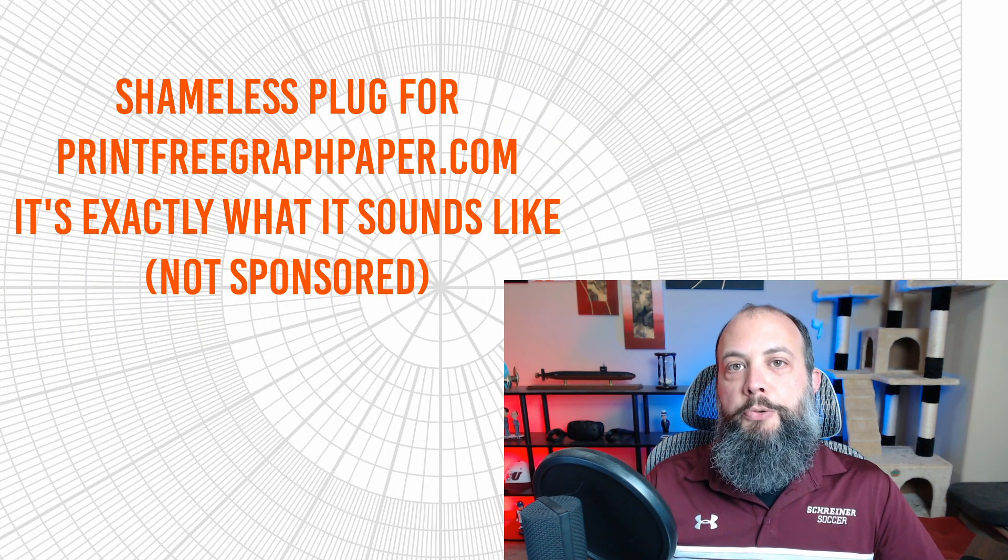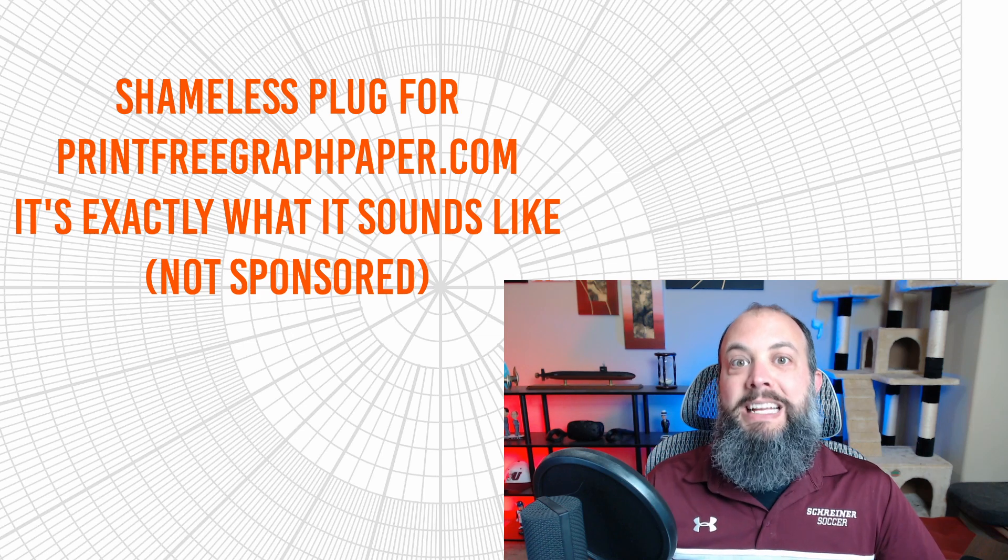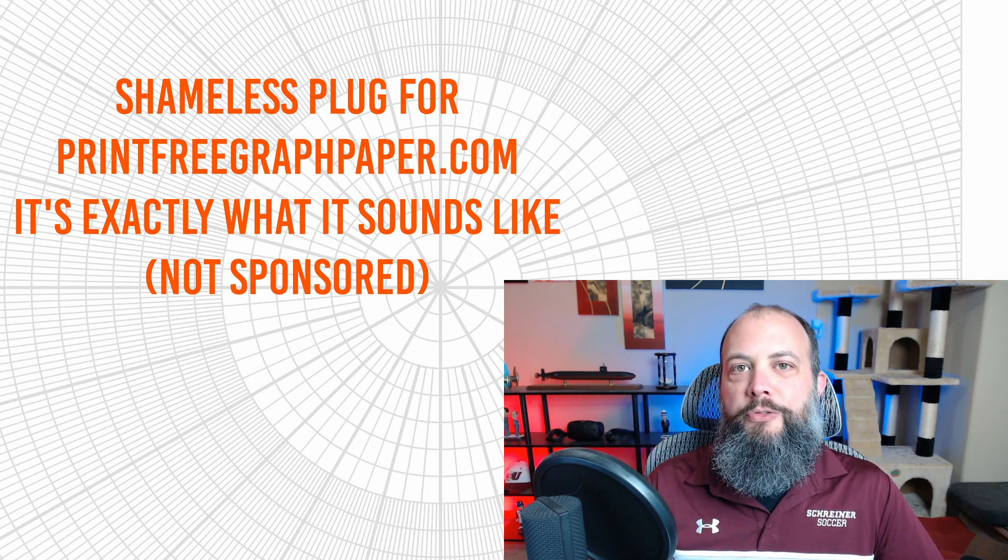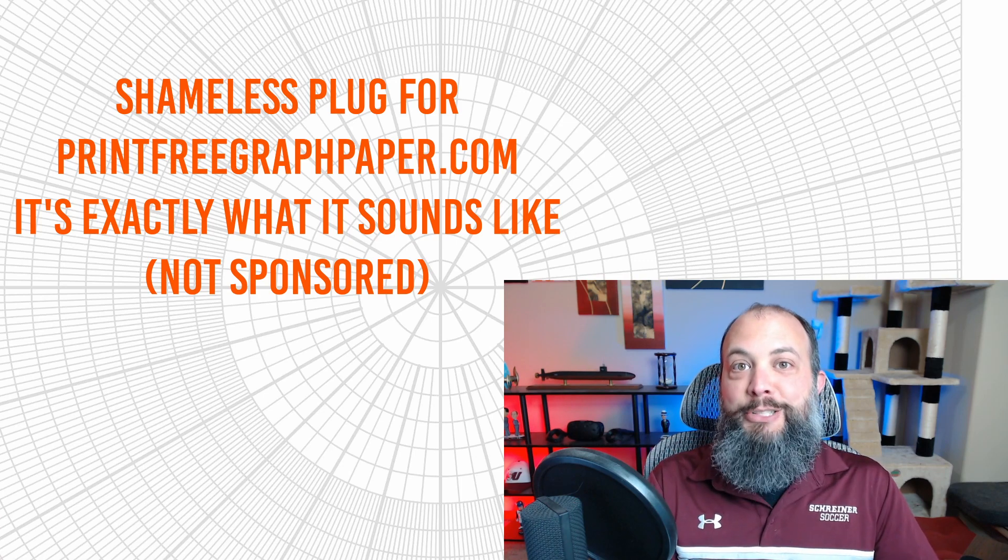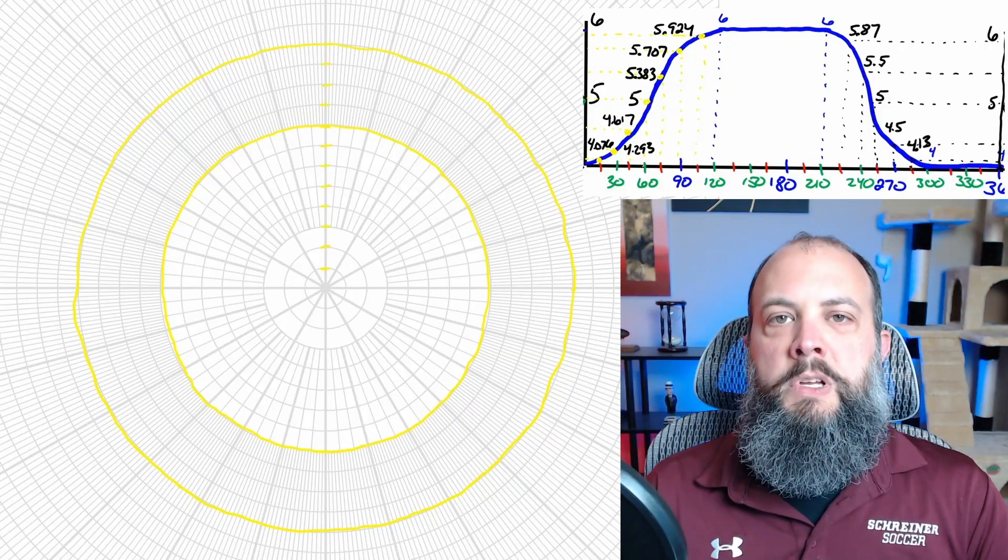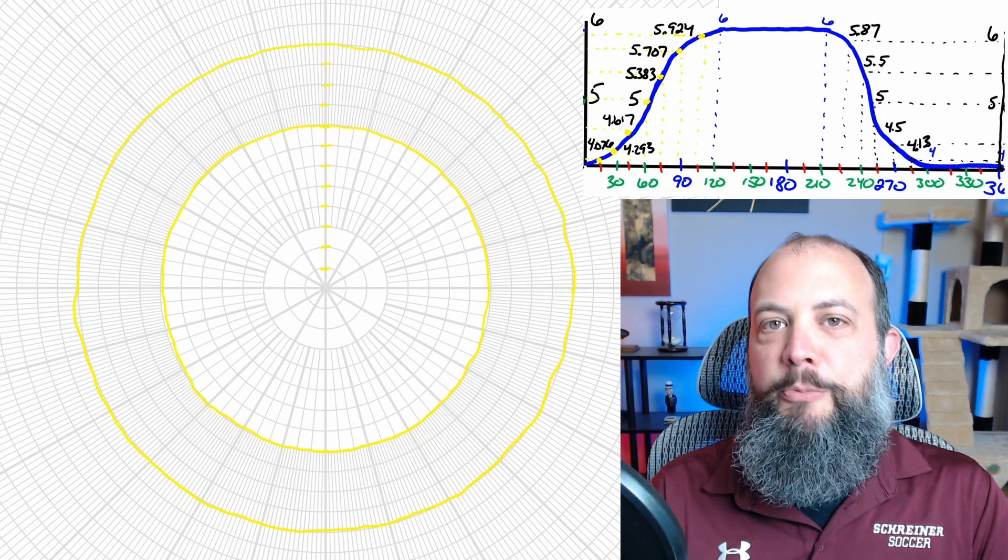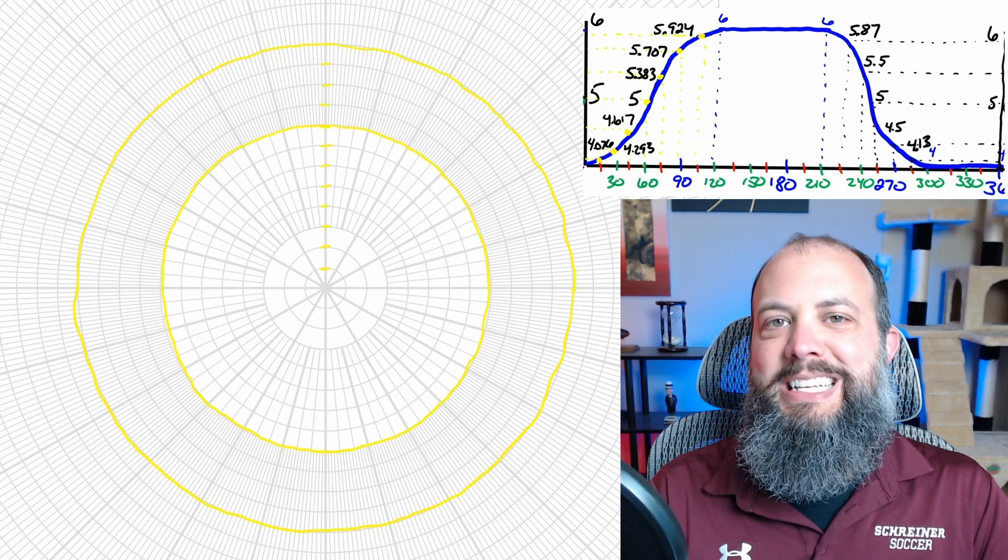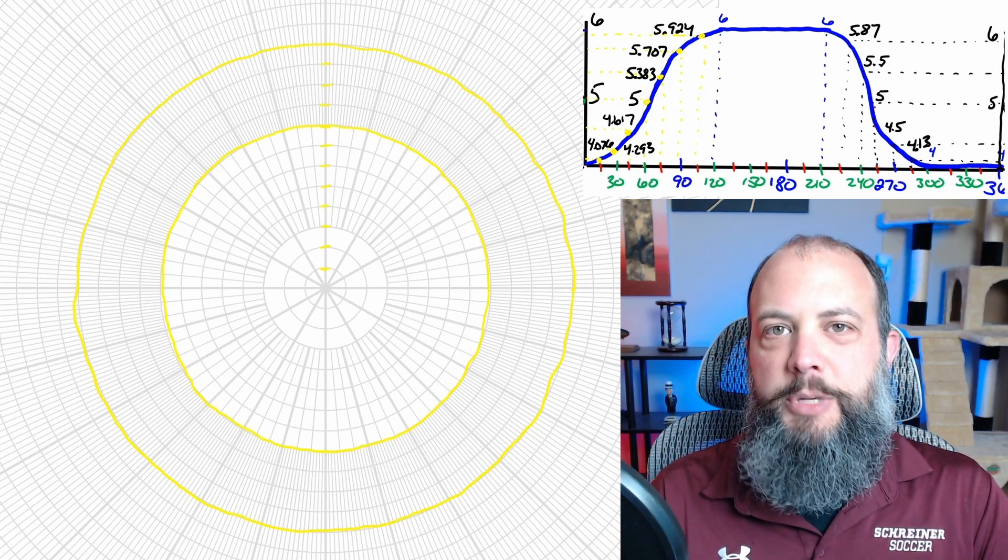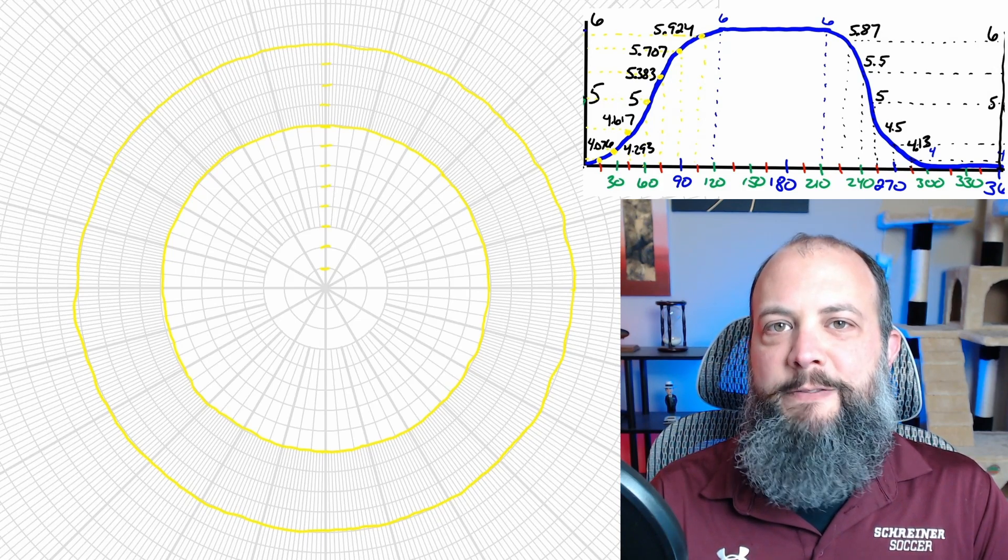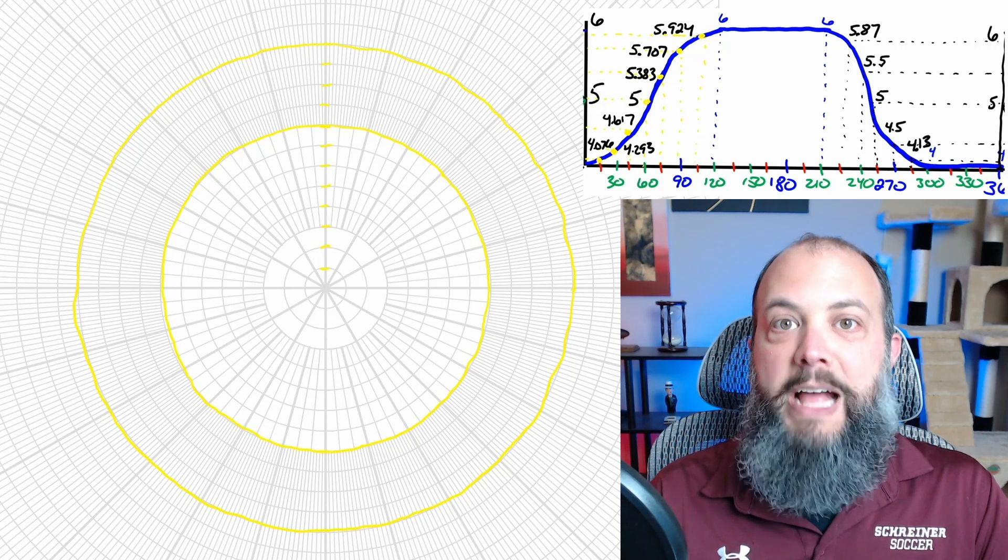So if you don't already have polar graph paper, get some. For drawing cam profiles, polar graph paper is the absolute best way because it already has a bunch of the angles already marked. So I'm just going to start off by drawing a very faint circle in yellow around at the minimum radius four centimeters and the maximum radius six centimeters. Each of the rings represents five millimeters or half a centimeter.